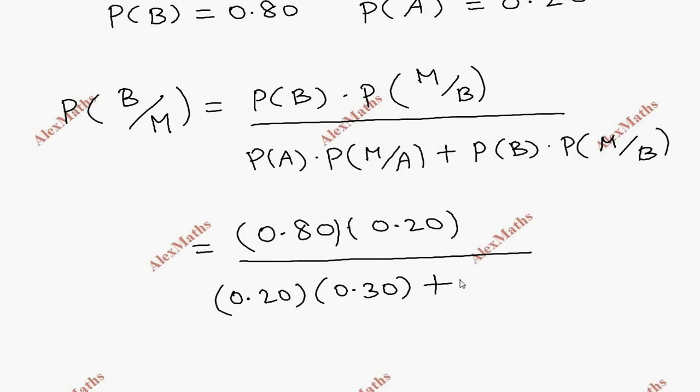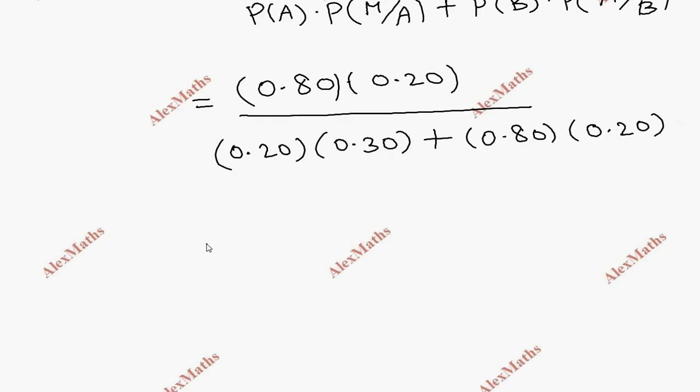The numerator is 0.80 times 0.20, which equals 0.16. The denominator is 0.20 times 0.30, that's 0.06, plus 0.80 times 0.20.